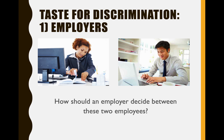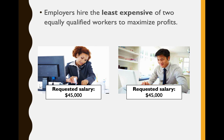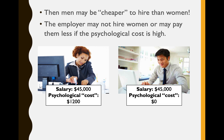We'll look at several different groups that can have a taste for discrimination, starting with employers. How would an employer decide between hiring two equally qualified workers — a woman and a man? We assume employers will hire the least expensive of the two equally qualified workers because they want to maximize profits. Let's say they both request the same salary — $45,000 annual salary. But what if the employer dislikes hiring women, has this taste for discrimination? In this case, Becker says the men would be cheaper to hire than the women, because the employer would incur some kind of psychological cost.